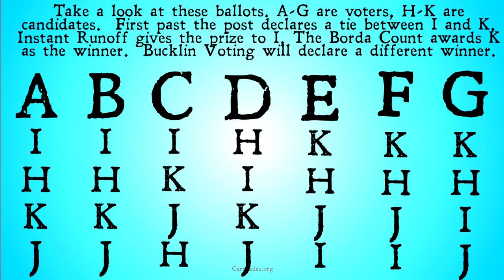Let's take a look at these ballots. A through G are voters, and H through K are candidates. First past the post declares a tie between I and K, because I has three first place votes and K has three first place votes, so they're both winners under first past the post.